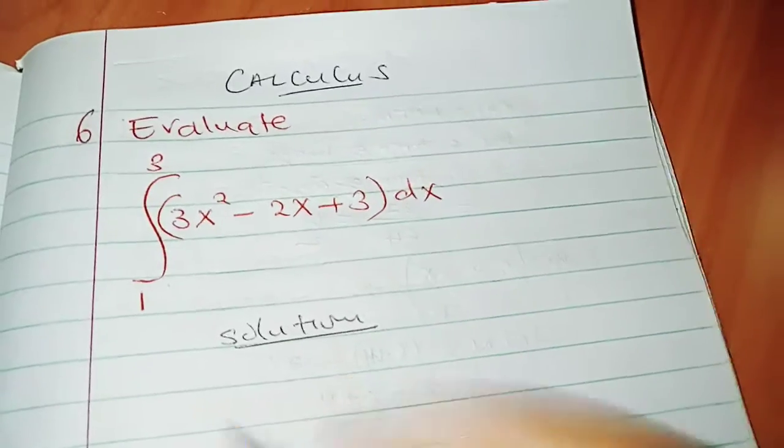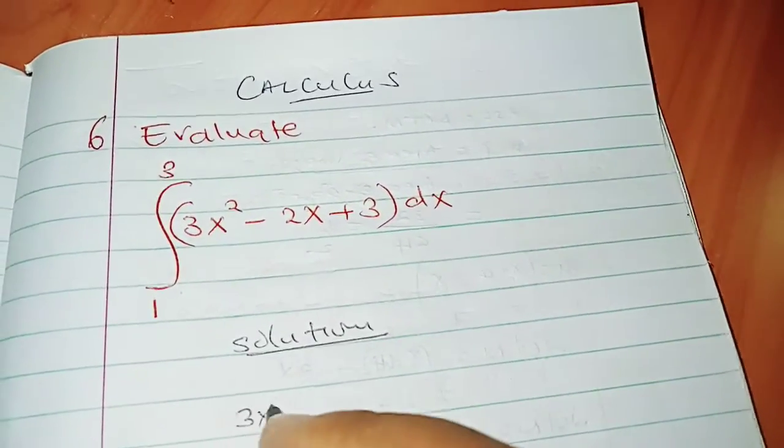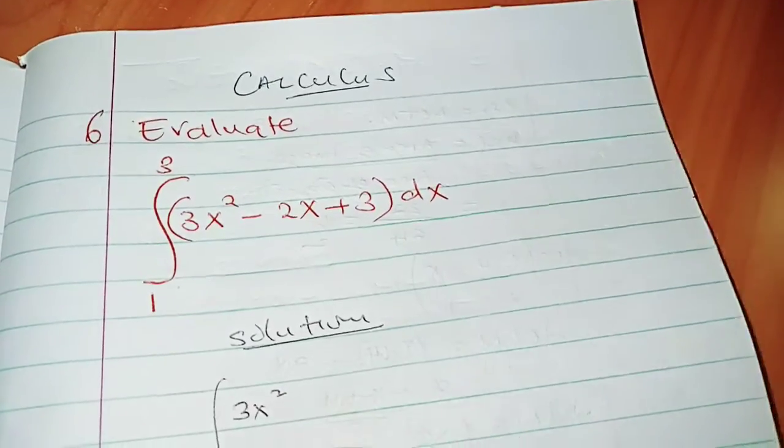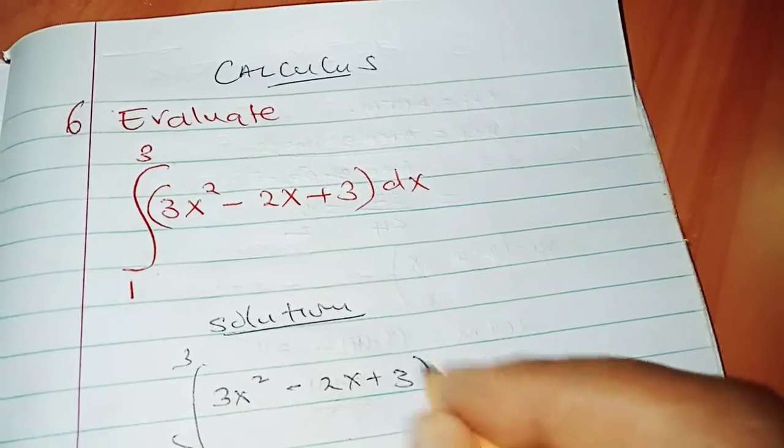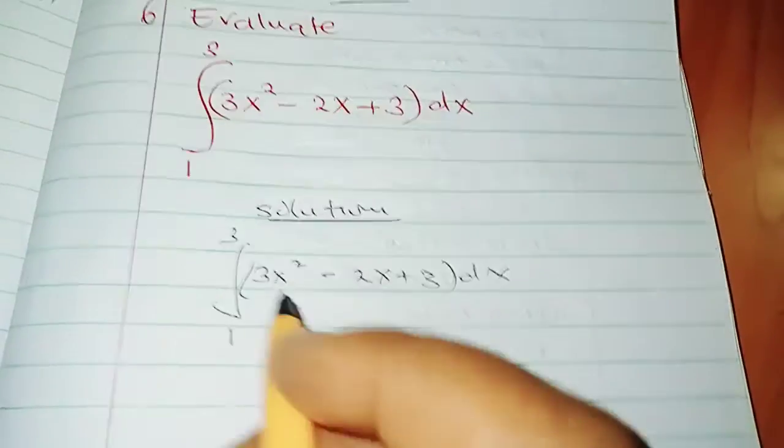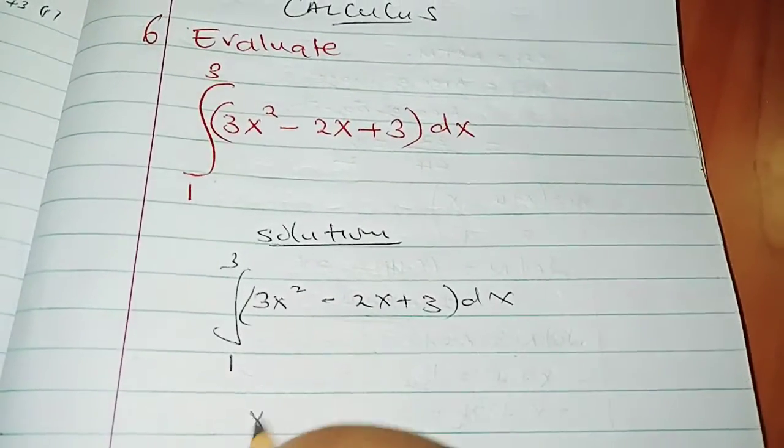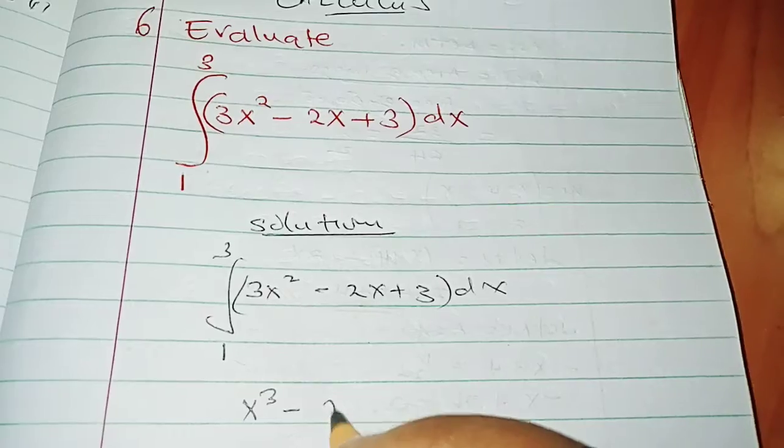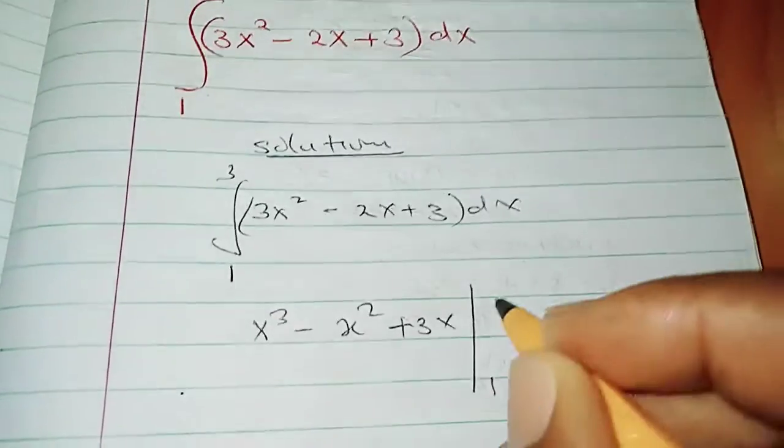We are told to integrate 3x² - 2x + 3 from 1 to 3 with respect to x. We are going to approach it this way. We integrate the function term by term. When you integrate this entire function term by term, we're going to have x³ - x² + 3x, and we evaluate from 1 to 3.